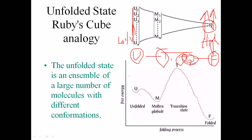The unfolded state represents a large number of molecules with different conformations. We have many protein chains, but all those chains adopt different, non-stabilized conformations — that is why we call them unfolded. We have all the amino acid sequences and peptide bonds, but what we lack is the stabilization of conformation and the specificity of interactions between amino acid sequences.